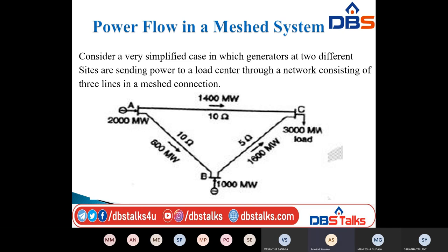Such a situation would overload line BC. Therefore, generation would have to be decreased at B and increased at A in order to meet the load without overloading the BC line.